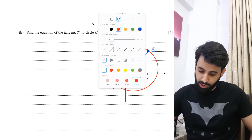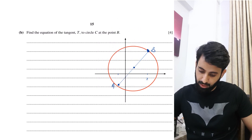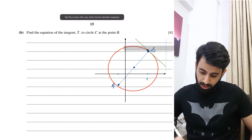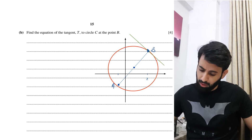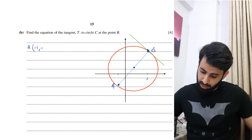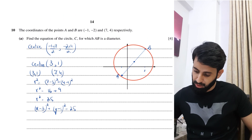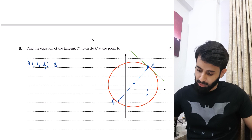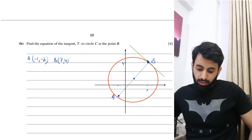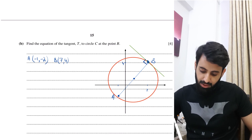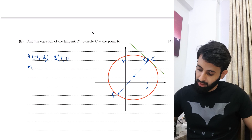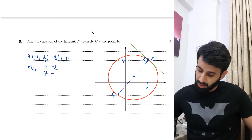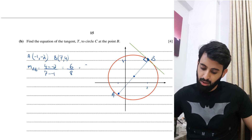Since the tangent is perpendicular to the radius at B, I need to find the gradient of line AB and then take the negative reciprocal. The gradient of AB is: (4 minus minus 2) over (7 minus minus 1) = 6 over 8 = 3 over 4. That makes sense — it's a positive-sloping line.